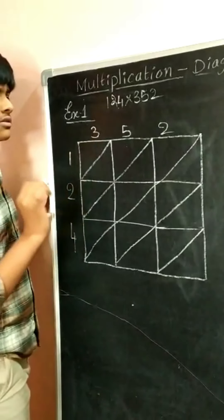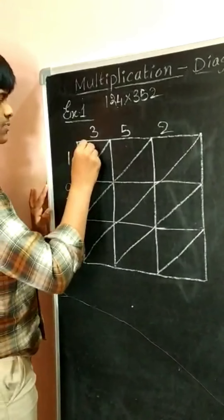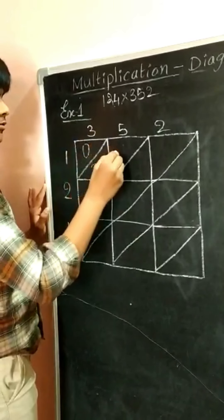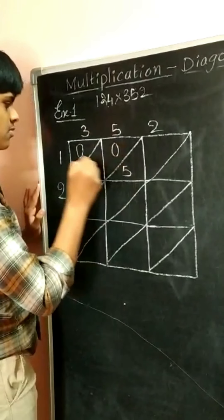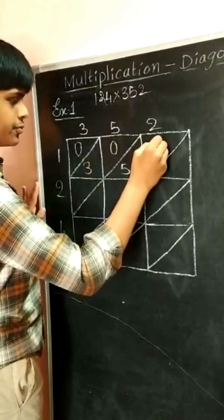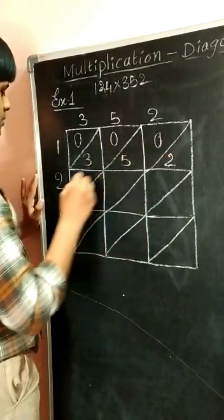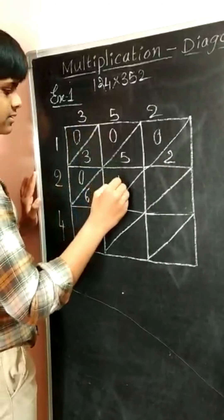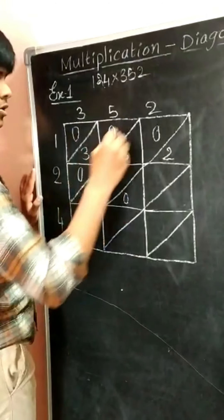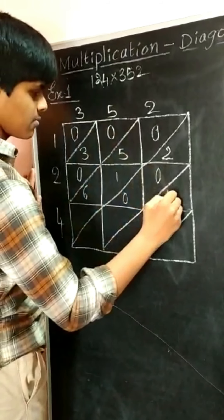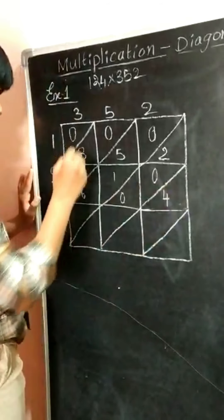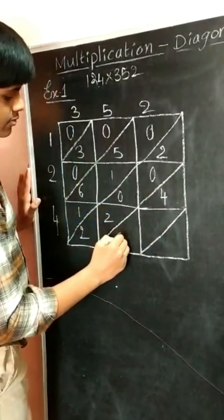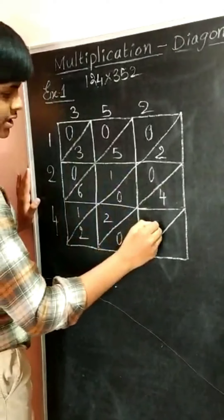1×3=3; 3 is a single digit number, so keep 03. Similarly, 1×5=5. 1×2=2. 2×3=6. 2×5=10. 2×2=4. 4×3=12. 4×5=20. 4×2=8.